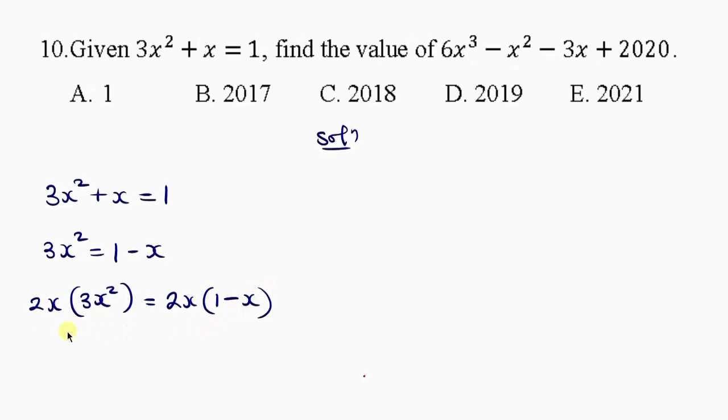So let's multiply. 2x times 3x squared will give you 6x cubed. Equal to 2x times 1 will give you 2x minus 2x times x will give you 2x squared. Now I'm going to have to call this equation 1.